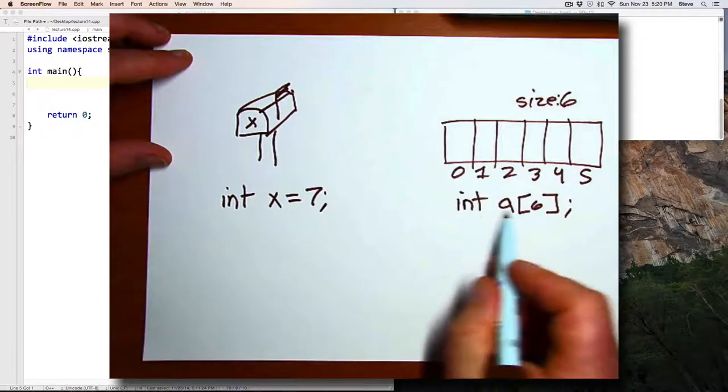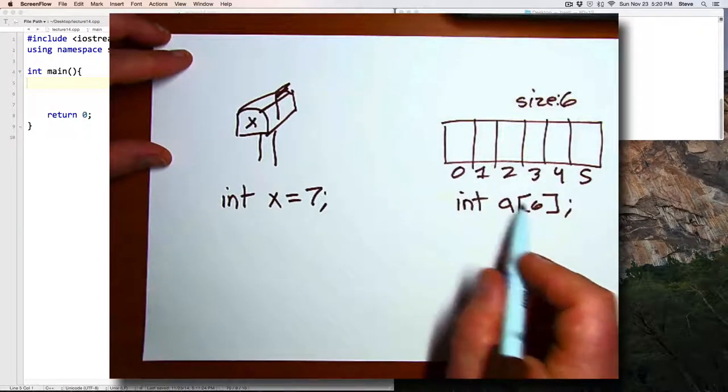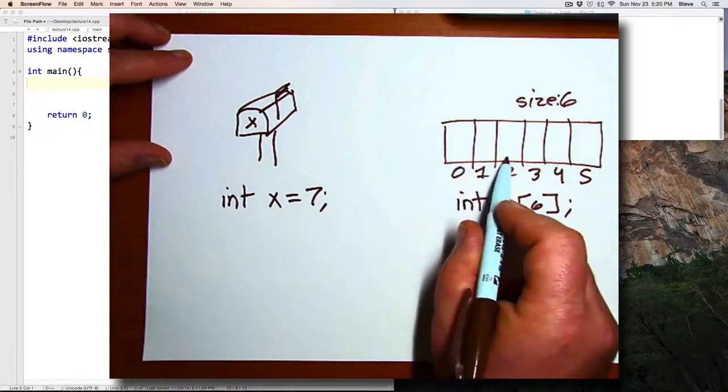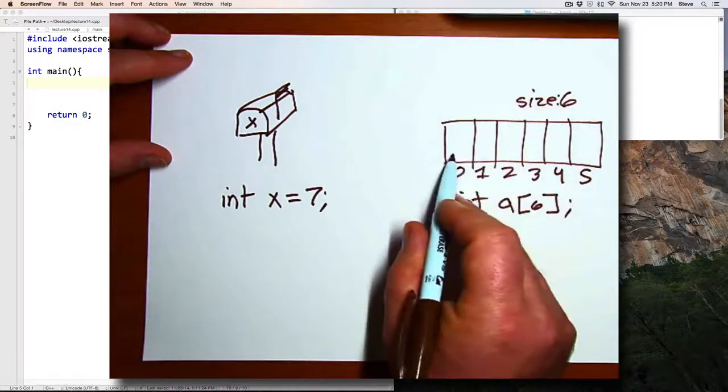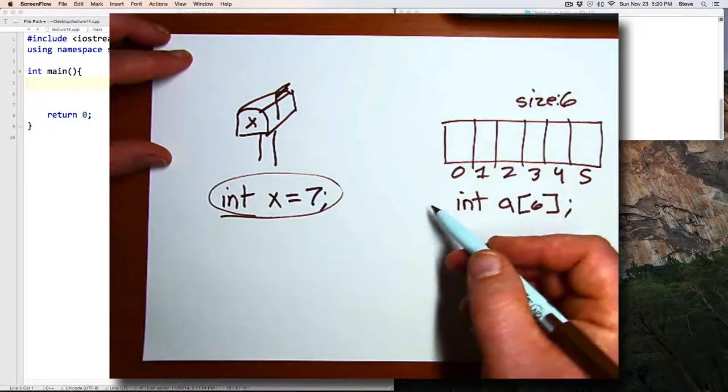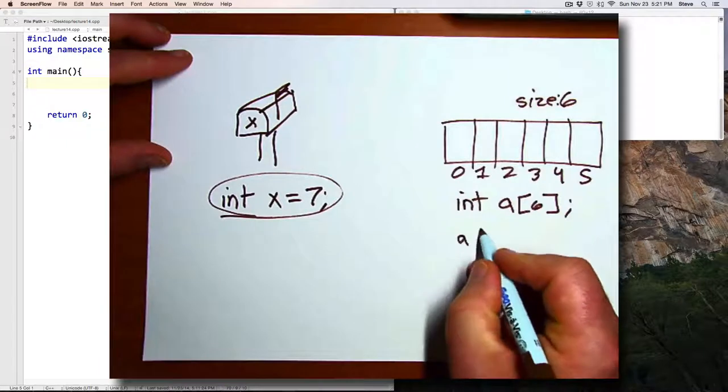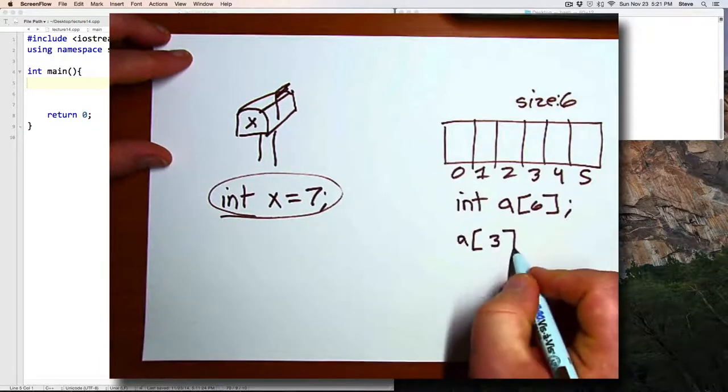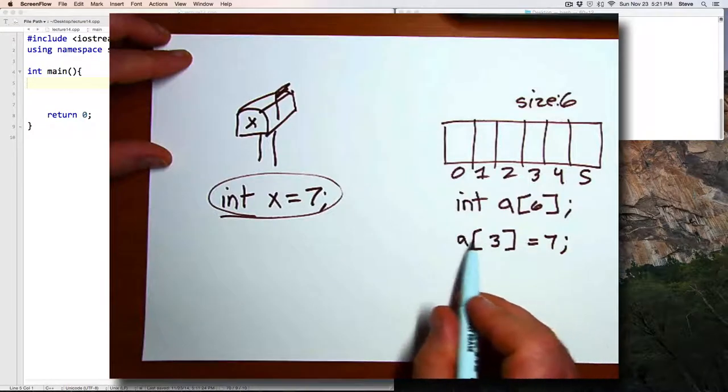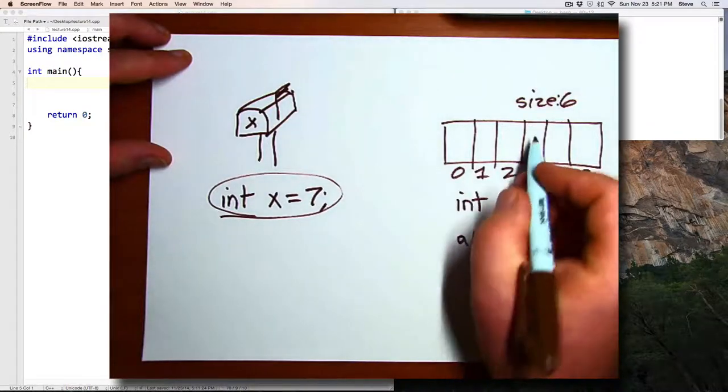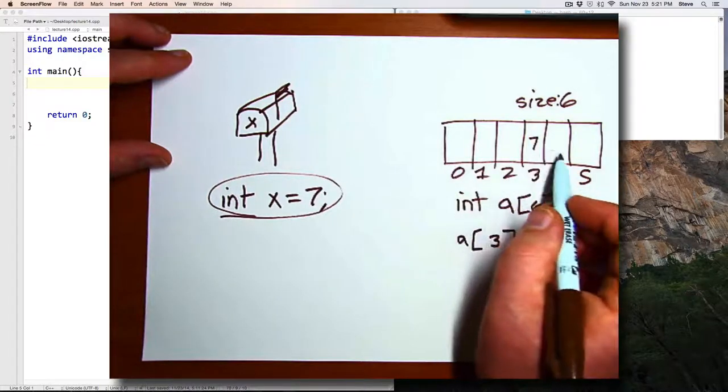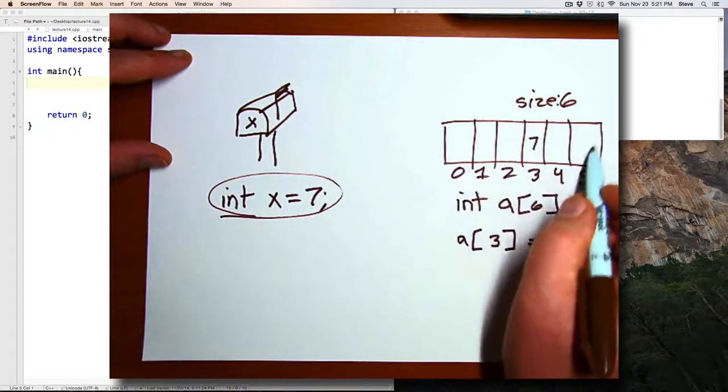On a computer, arrays and vectors containers are indexed starting at zero. We also saw this with a string, in which the first character position was zero. So arrays and vectors have that in common with strings. Here is the declaration of an array with six positions in it. Each one of those positions then works like an ordinary integer variable. So just like x, you can assign a value to it or do arithmetic with it. To do that, you use the square brackets, and then you can get to any particular position. So here, a[3] would put a 7 in position 3.